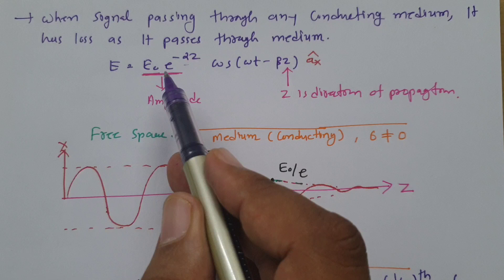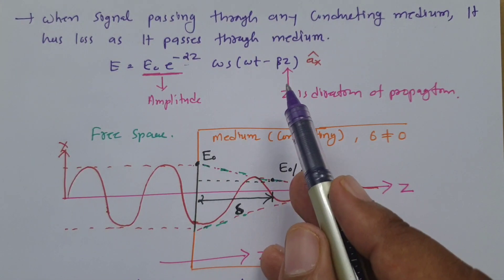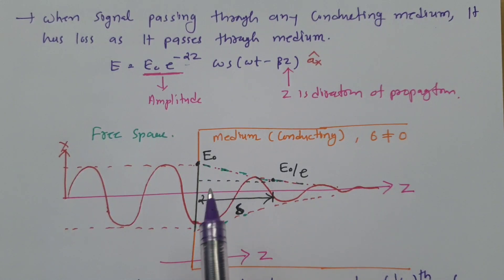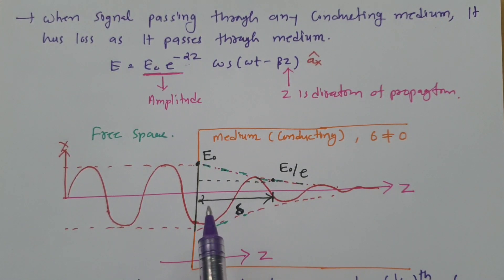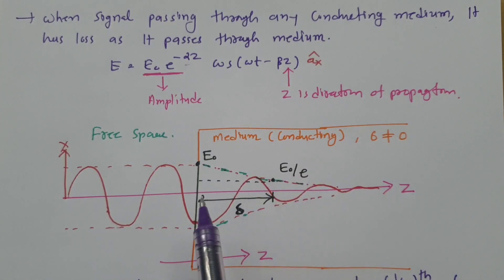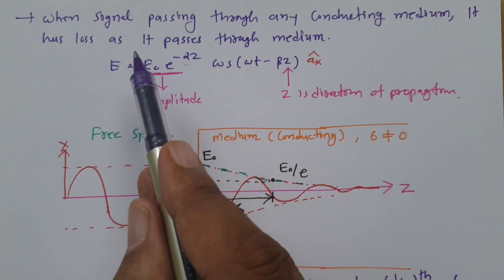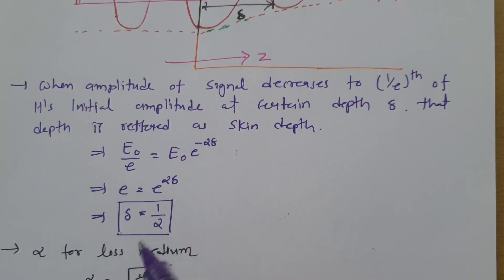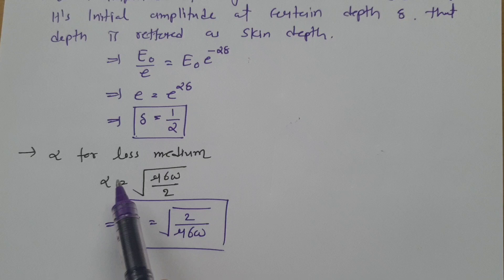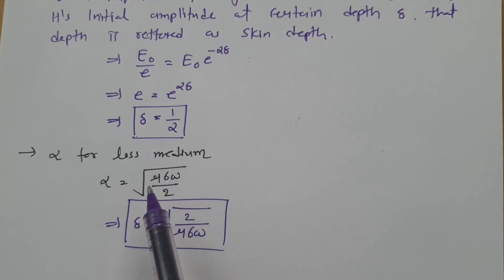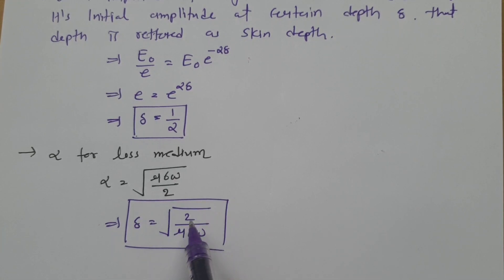The ultimate thing is: the signal propagates with amplitude E0 times e to the power minus alpha z along the z direction, and the amplitude decreases along z. At a certain depth it will be E0/e, and at that depth we call it skin depth. If you place z equals delta, the amplitude becomes E0/e, which results in delta equals 1/alpha. For a lossy medium, the approximated value of alpha is the square root of (mu sigma omega / 2), resulting in skin depth equal to the square root of (2 / mu sigma omega).